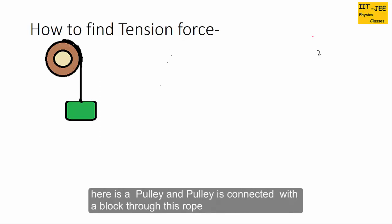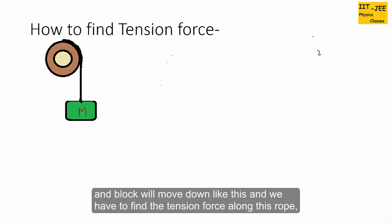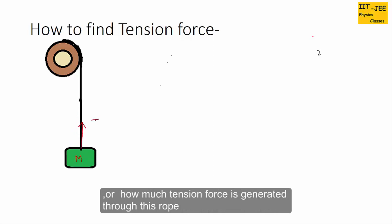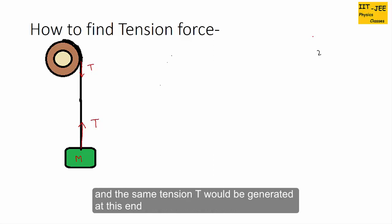Let's take an example. Here is a pulley connected with a block through this rope. When we release this block, the weight of the block will pull it down and the block will move down. We have to find the tension force along this rope. As this is the same rope, the same tension T would be generated at this end and at this end.